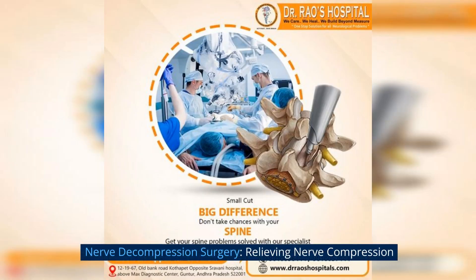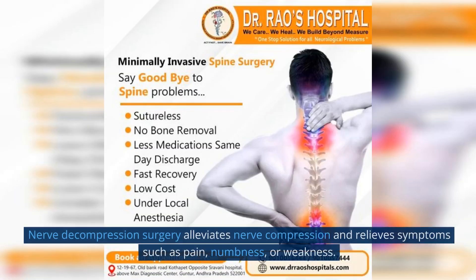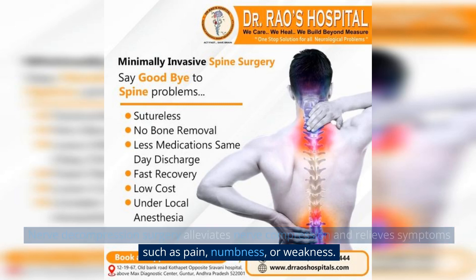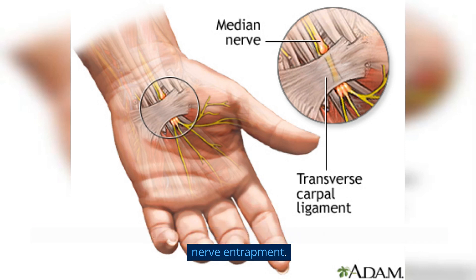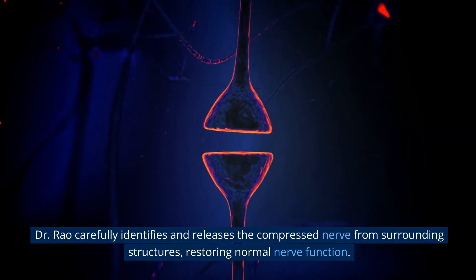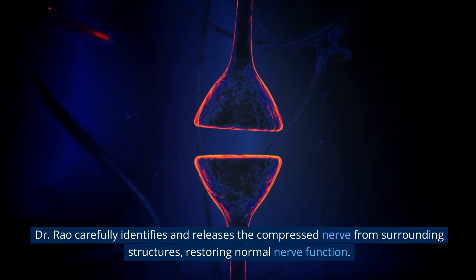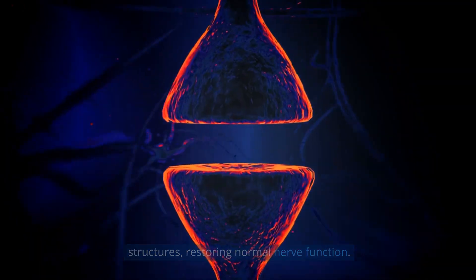Nerve Decompression Surgery – Relieving Nerve Compression. Nerve decompression surgery alleviates nerve compression and relieves symptoms such as pain, numbness, or weakness. It is commonly used to treat conditions like carpal tunnel syndrome or peripheral nerve entrapment. Dr. Rao carefully identifies and releases the compressed nerve from surrounding structures, restoring normal nerve function.